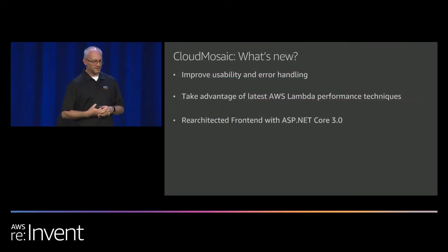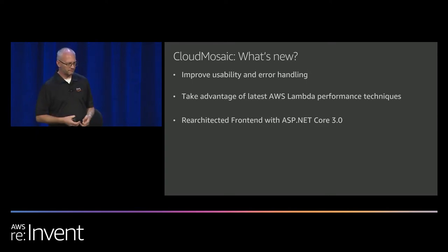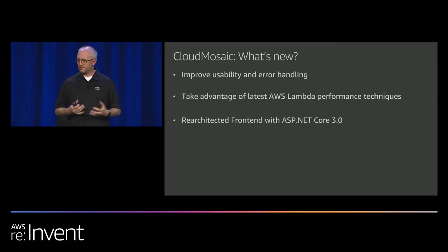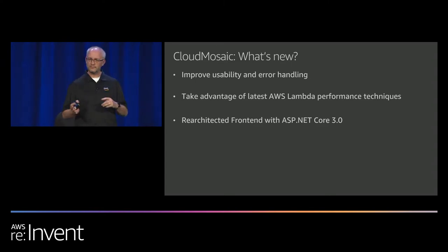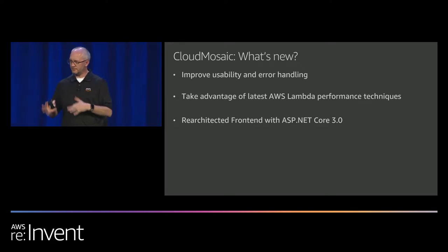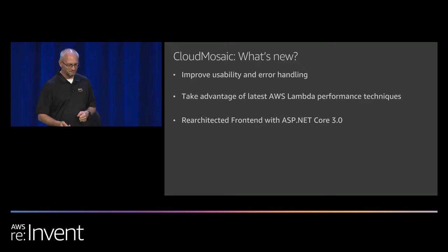For this year, what's new? Last year was very much a V1 — it lacked error handling entirely. If anything failed, you got no feedback. We wanted to fix that and improve usability. Lambda has made many strides with performance improvements over the last year, and we wanted to take advantage of those techniques. We re-architected the front end with ASP.NET Core 3.1 — it was 3.0, but the night before last Norm converted the whole thing to 3.1. The good news is it still works and it was a very simple upgrade.